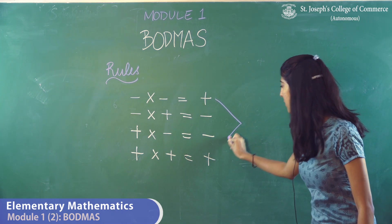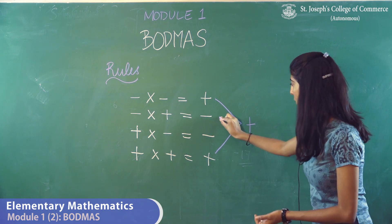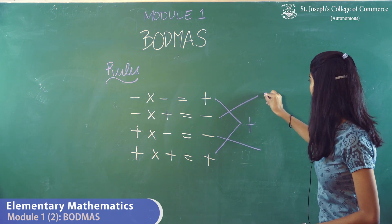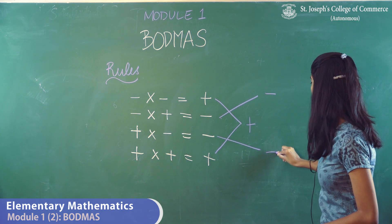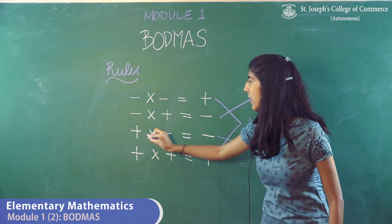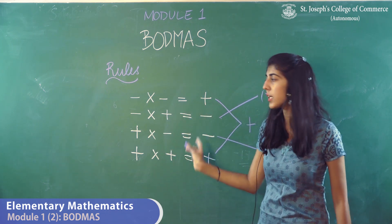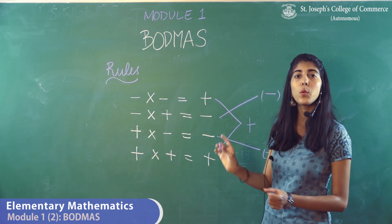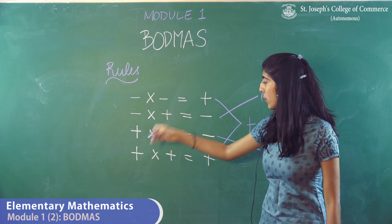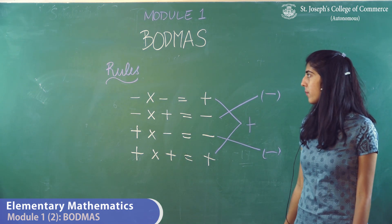Same signs give positive; opposite signs give negative. These are opposite signs. No matter what order they are in, if opposite signs are multiplied, they will give you a negative sign. And if same signs are multiplied, they will give you a positive sign.